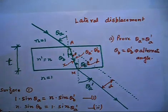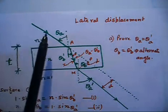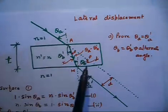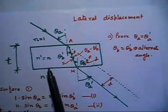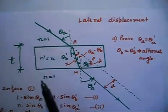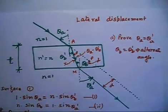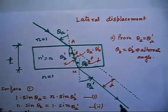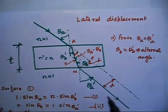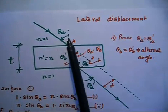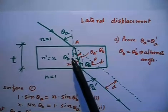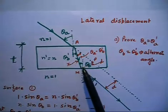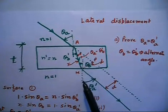I have a ray coming toward a slab. This slab has a refractive index of n, and the outside refractive index is 1 on both sides. So the environment has a refractive index of 1 unit. The angle of incidence is theta_a. The angle of refraction through the first face is theta_b'. The angle of incidence on the second face is theta_b, and the angle of refraction through the second face is theta_a'.